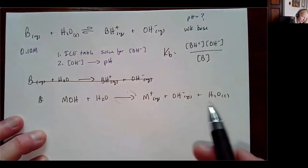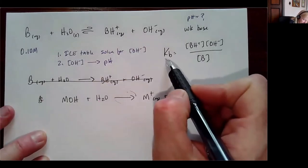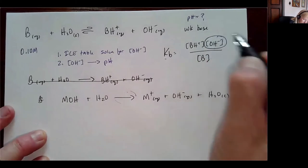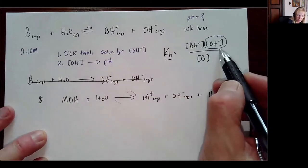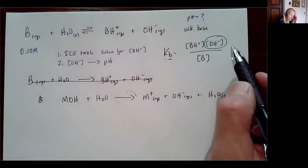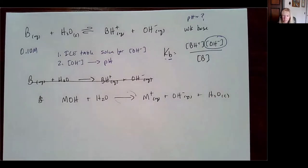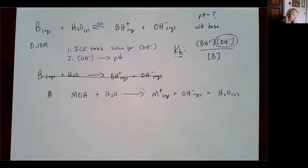This is a lot like what we did with Ka, but instead of solving for hydronium ion concentration, when you use a Kb you're always solving for hydroxide ion concentration. We'll do these calculations in our Zoom meeting, looking at both Ka and Kb calculations.